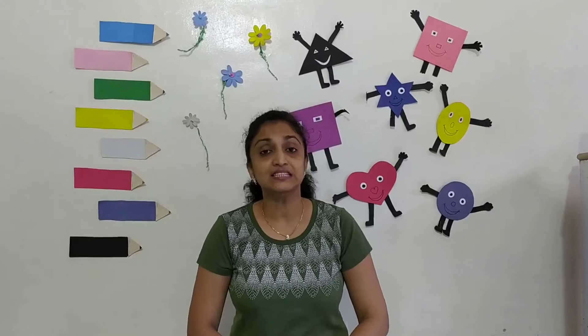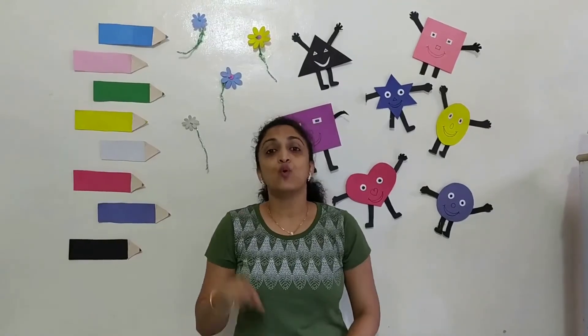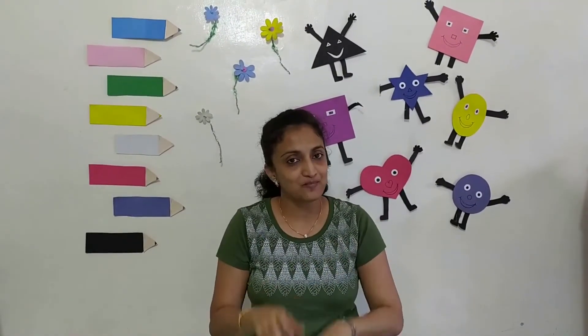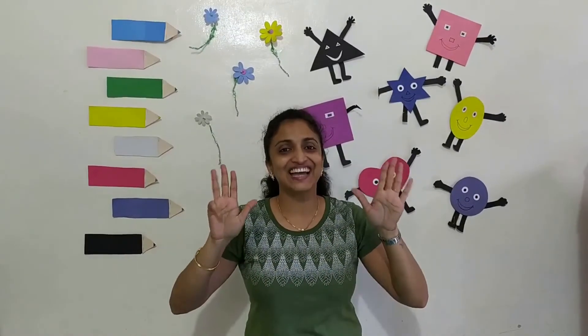Now children, let's sing the number song. One, two, buckle my shoe. Three, four, shut the door. Five, six, pick up the sticks. Seven, eight, lay them straight. Nine, ten, a big fat hen.